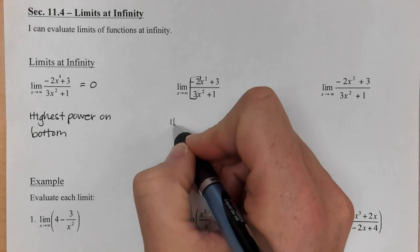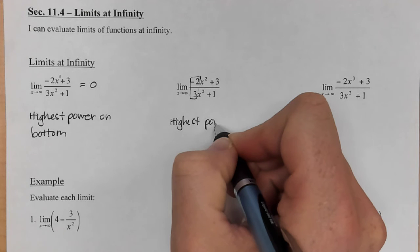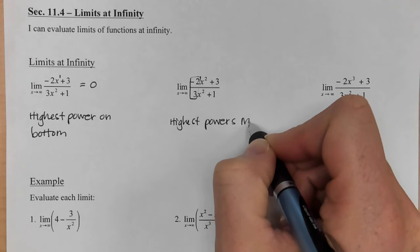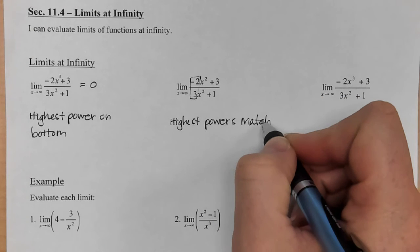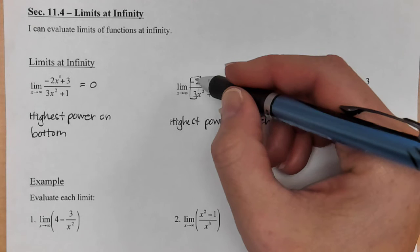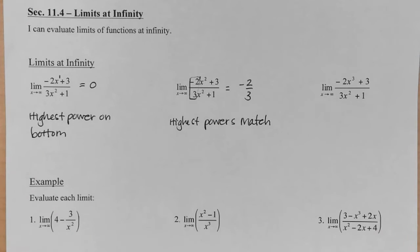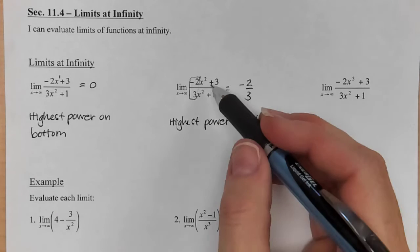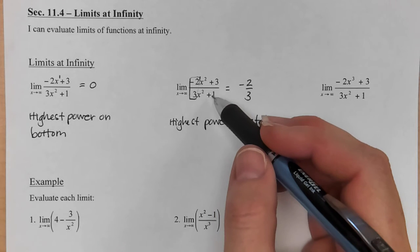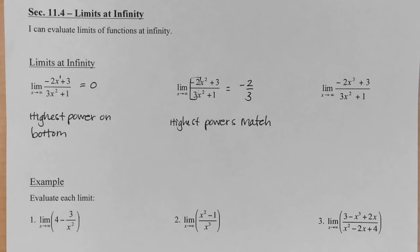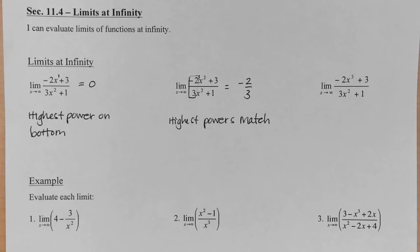So when the powers match on top and bottom, then you look at their coefficients. And in this case it's negative 2 thirds and that's what the limit will be, is negative 2 thirds. Again, when you have a plus on the end or even a minus on the end, those numbers become so insignificant compared to infinity that we don't really even need to bother with them.